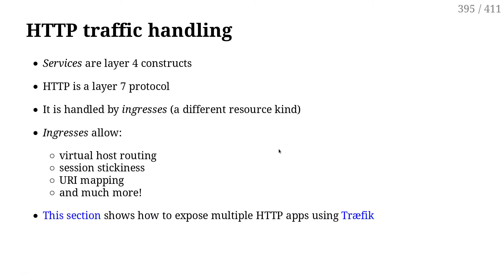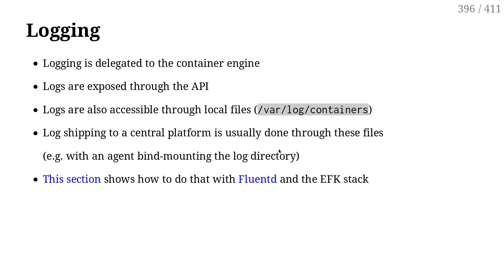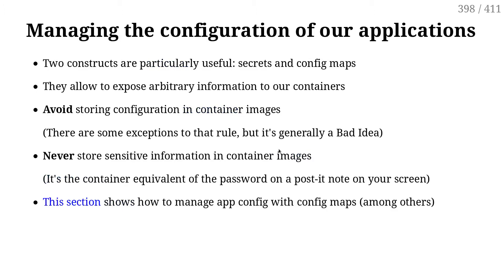HTTP traffic handling — there is something called ingresses that lets you associate virtual hosts with services. So if you want to expose HTTP traffic, that can be really useful. We've also talked about logging and metrics. About application configuration, there are a couple of constructs that are really useful: config maps and secrets. Config maps and secrets let you capture a configuration file or a bunch of configuration files, store them in the Kubernetes API, and then transform them back into files located in the pods.